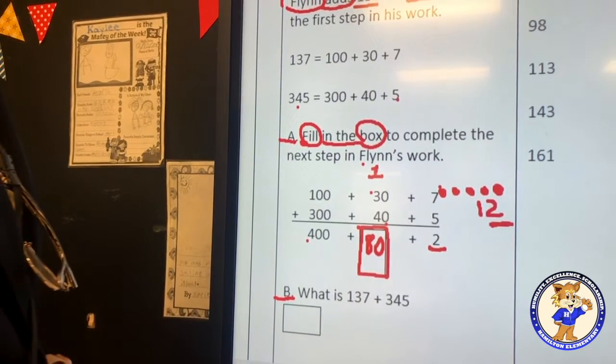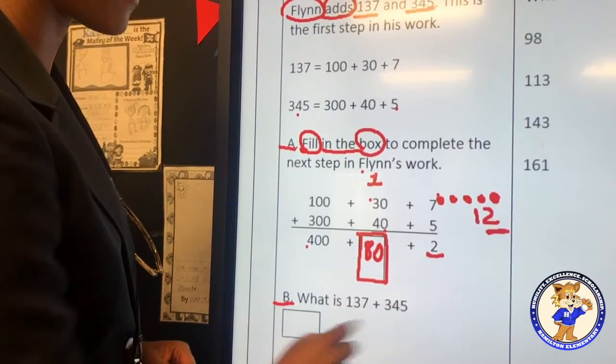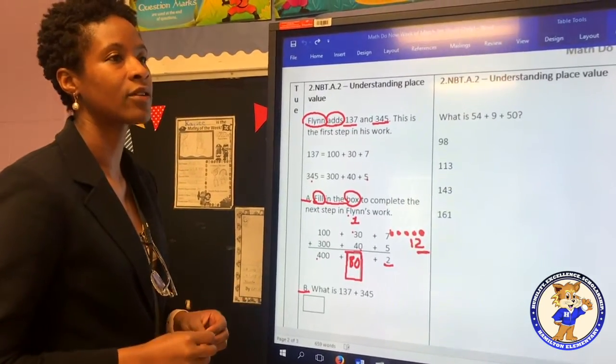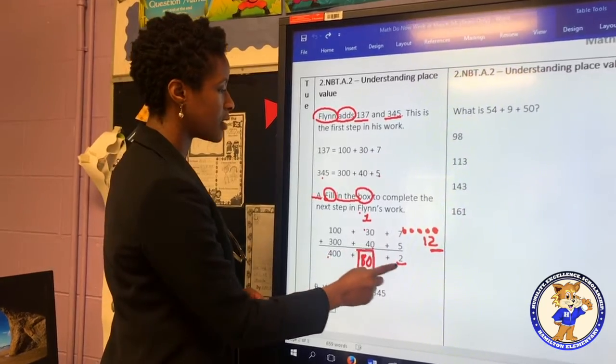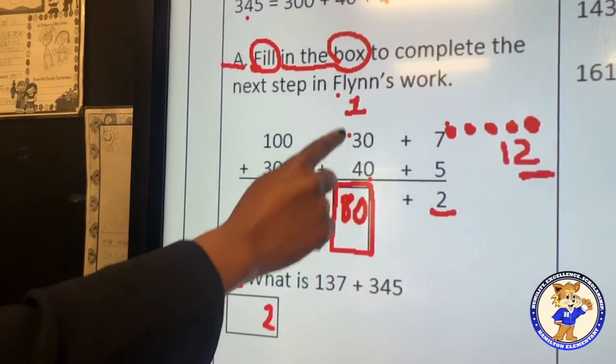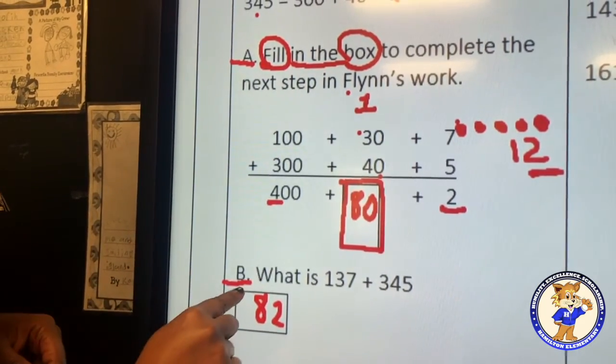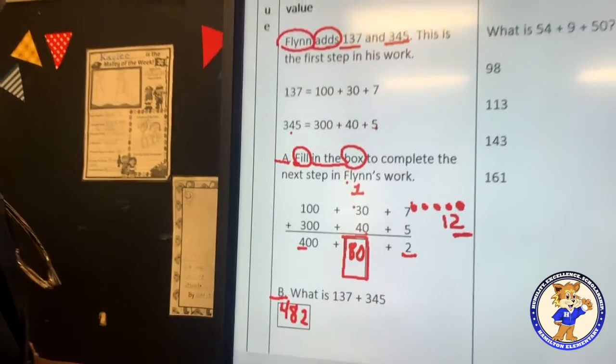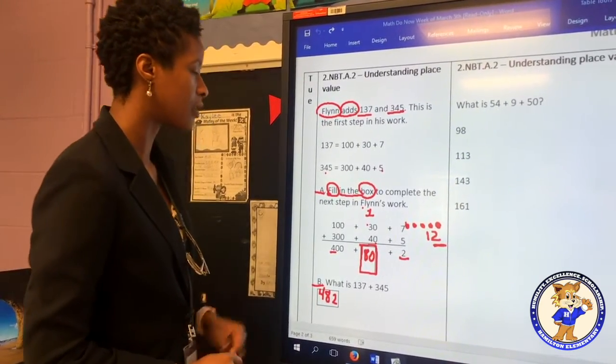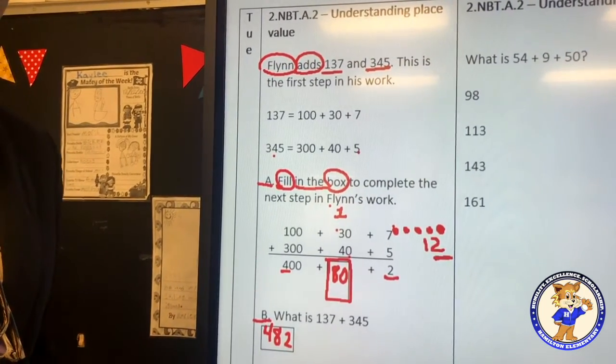We must also solve for B. B says, what is 137 plus 345? Well, we already have the answer here, but we must put it in its standard form without the extra zeros. So, we have 2 ones, we have 8 tens, and we have 4 hundreds. So, our new number, or the answer to the problem, is 482. This is how you solve 2 problems that are step A and B in understanding the computations of place value.